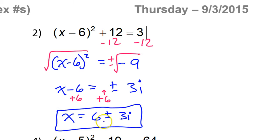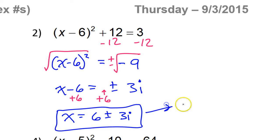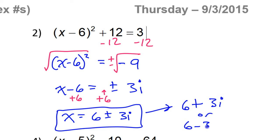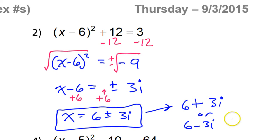Notice you cannot add or subtract these numbers. This means 6 plus 3i or 6 minus 3i. Either way, these are not like terms — you can't go any further.